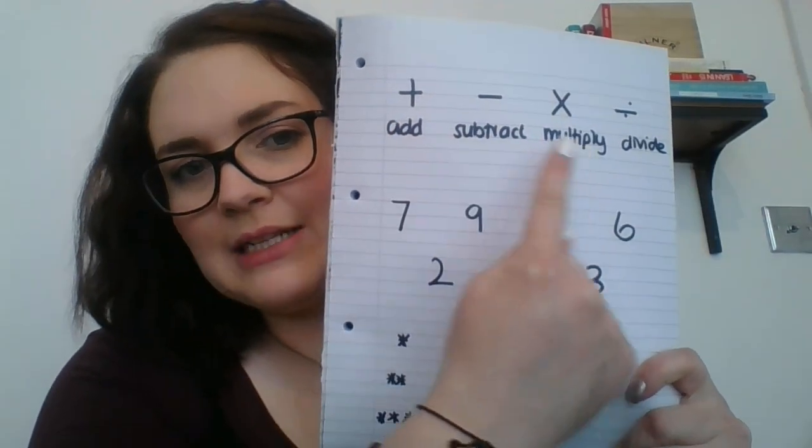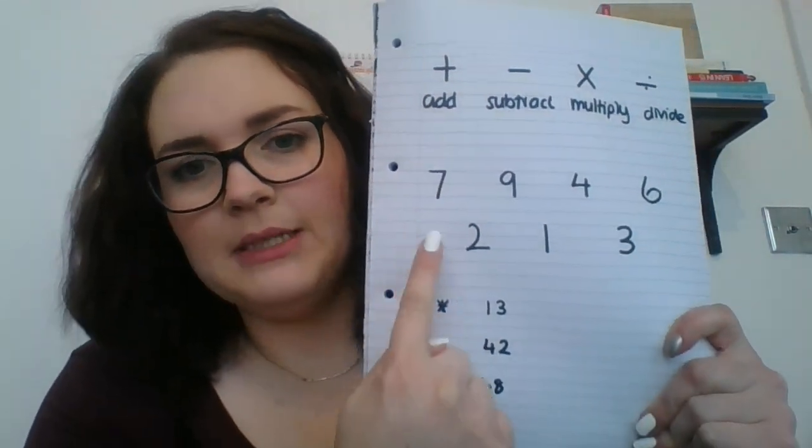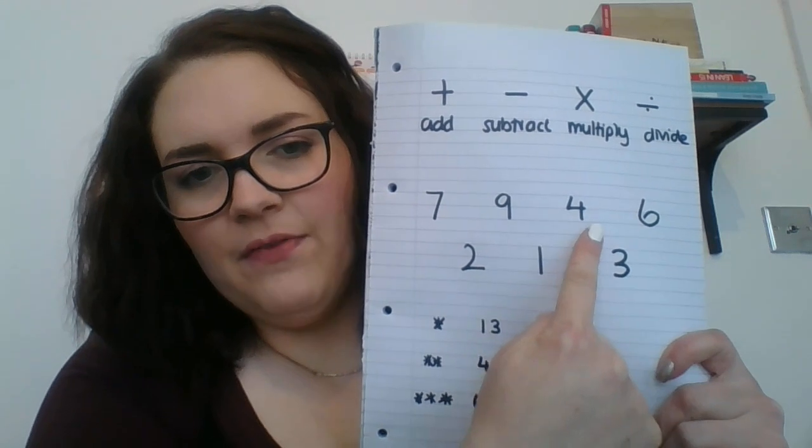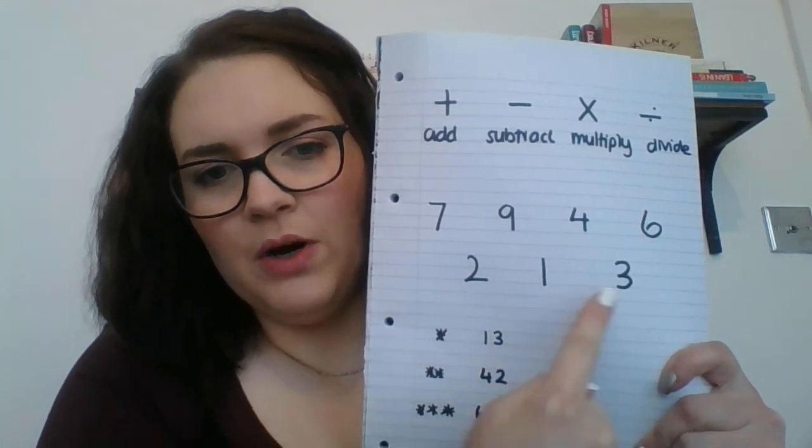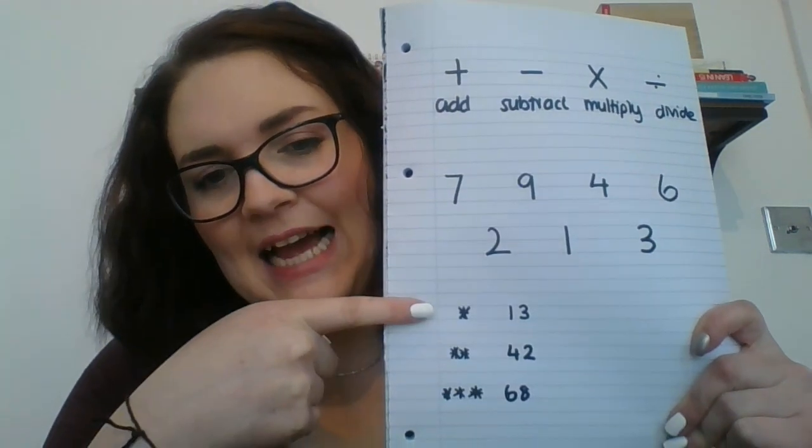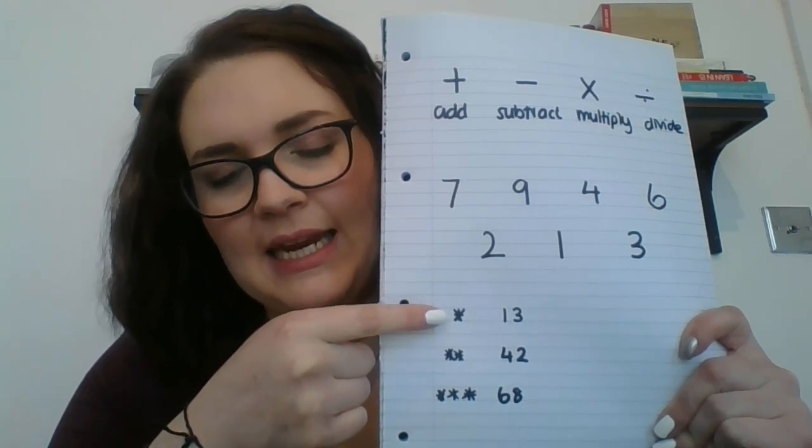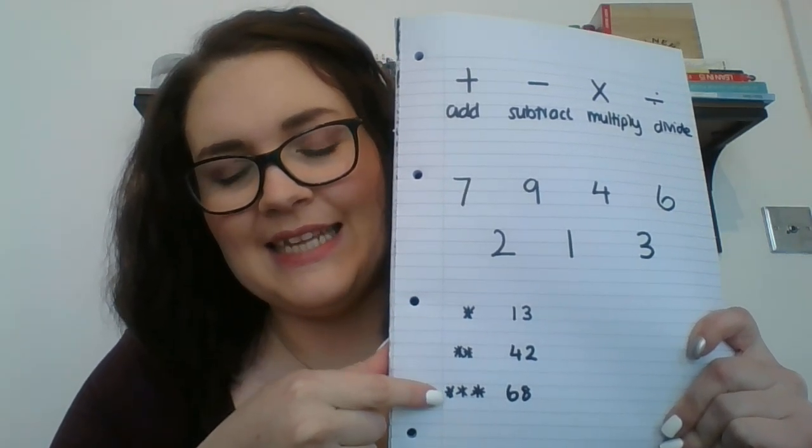You can add or subtract or multiply or divide these numbers. We've got seven, nine, four, six, two, one, and three. And then your target numbers that you could try to get to are 13, 42, and 68.